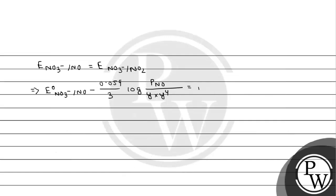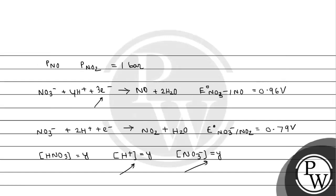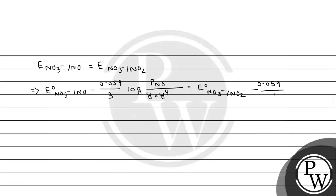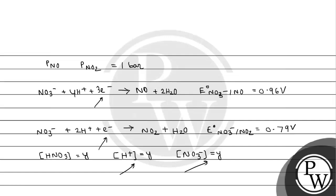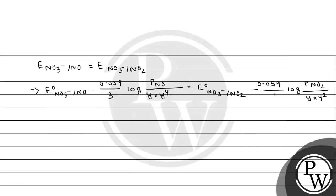This equals E0 for NO3- to NO2 minus 0.059 divided by 1 (one electron transferred) log of pressure NO2 divided by Y squared, according to this equation.